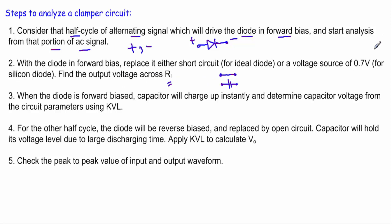There is a specific point about the 0.7 volt silicon diode. When replacing the diode with its built-in potential of 0.7 volt, I replace this diode with a voltage source of 0.7V where the positive side of the voltage source is on the P-side of the diode and the negative side is on the N-side of the diode, denoted as a 0.7 volt source.